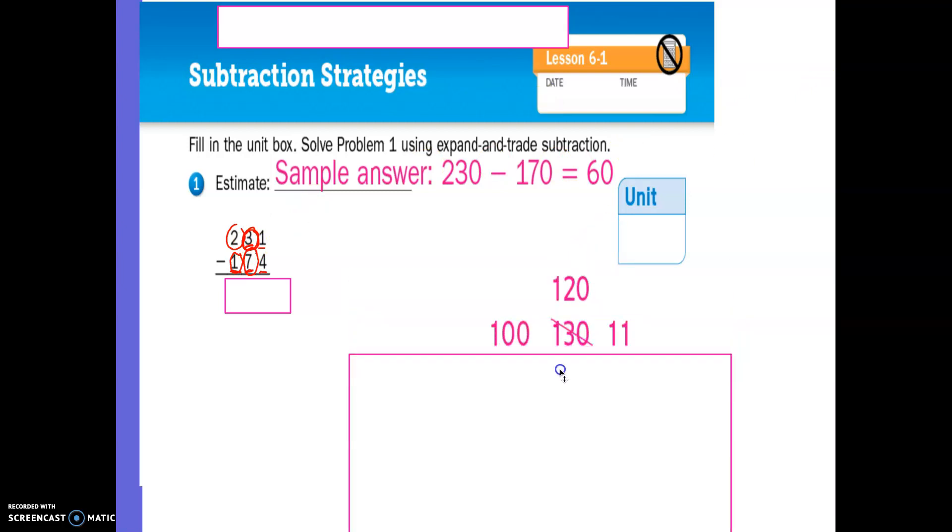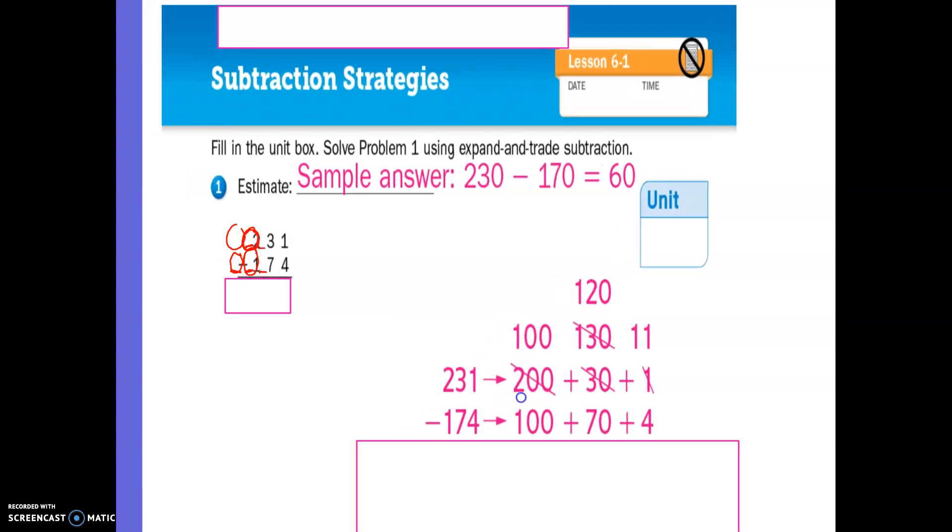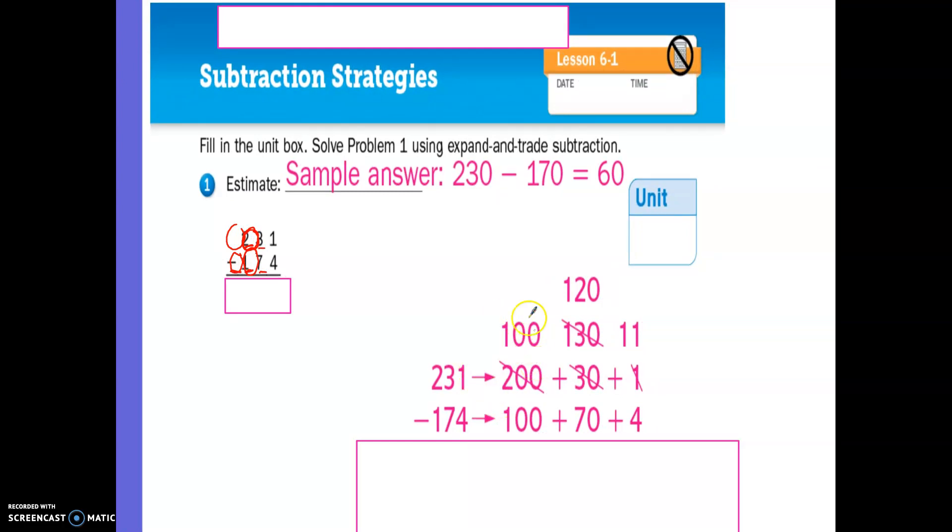So there's two hundreds. How many tens are there? There are three tens. And how many ones are there? There's one one. What about in the number 174? How many hundreds are there? There's 100. There are seven tens. And there are four ones. Okay. Now, is 200 greater than 100? Yes, it is. Is 30, and I'm circling the digit three, but that's in the tens place, so it's not just three, it's 30. Is 30 greater than 70? No, it's not. Is 30 equal to 70? Well, no, it's not. Then we need to make a trade.